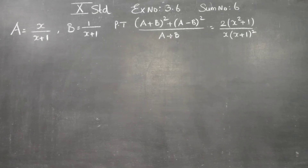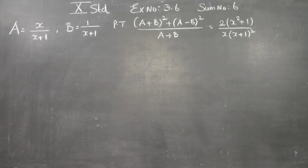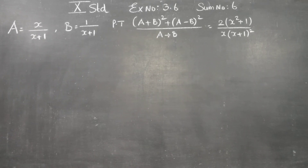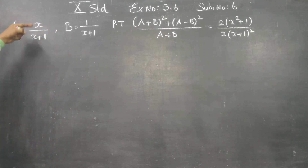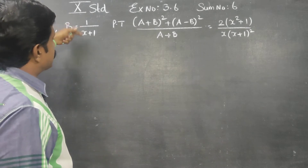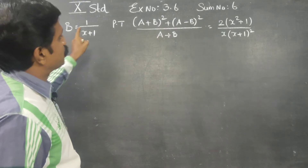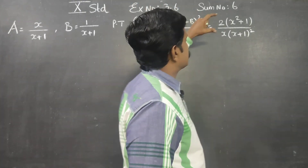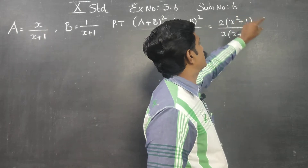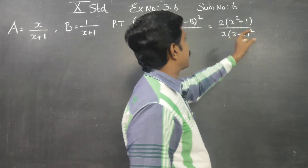Dear 10th standard students, in exercise number 3.6, sum number 6, it has been given: a equals x by x plus 1, b equals 1 by x plus 1. We have to prove this whole expression is equal to 2 times of this by x plus 1.